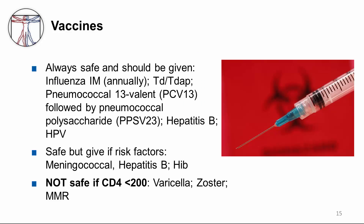Finally, what about vaccines? Vaccines that are always safe and should be given include influenza intramuscularly — not necessarily the nasal mist — Tdap, the pneumococcal 13-valent or PCV13 followed by the pneumococcal polysaccharide PPSV23 vaccine, hepatitis B, and HPV. If there are risk factors, we would recommend meningococcal vaccine, hepatitis B, and HIB. Although varicella, zoster, and MMR are safe if the CD4 count is greater than 200, we still feel very nervous about using these live attenuated vaccines in patients who have suppressed immune systems with CD4 less than 200.